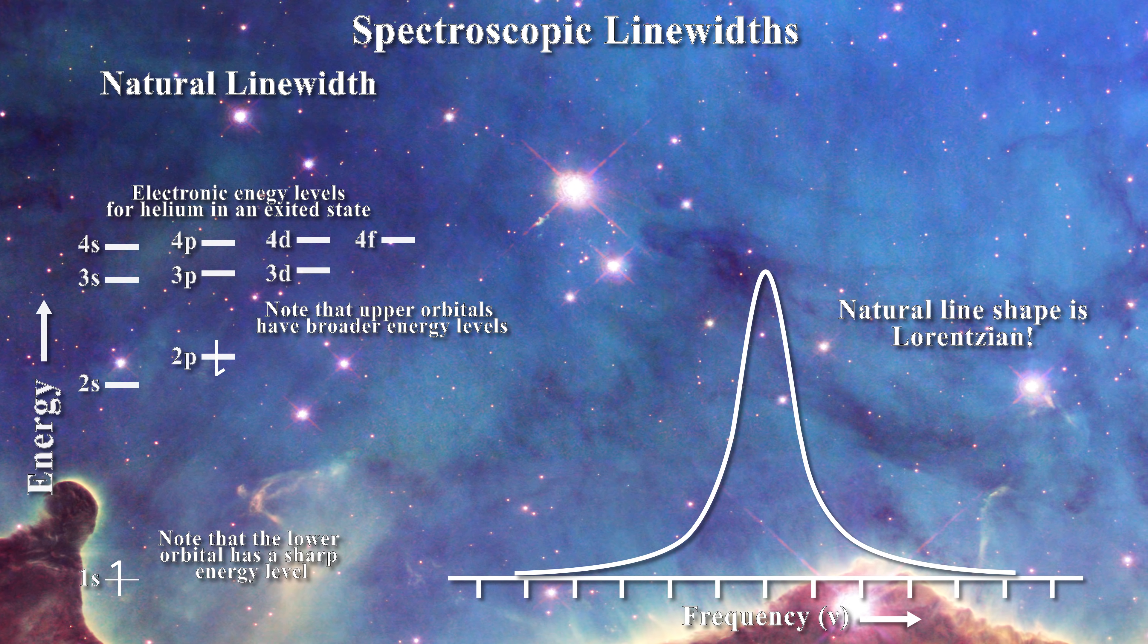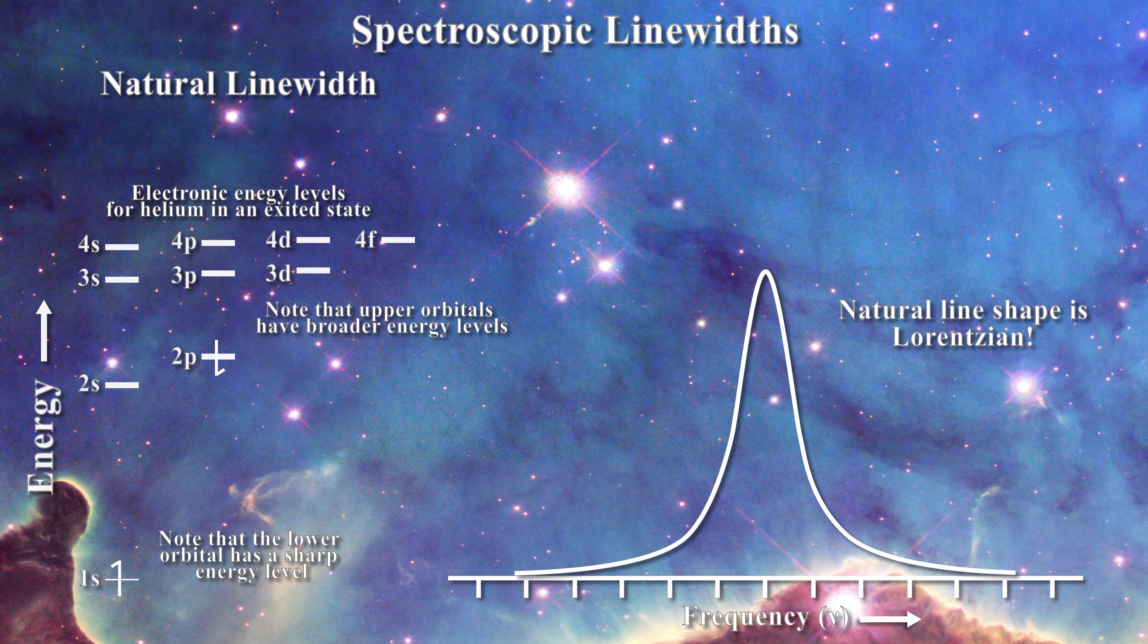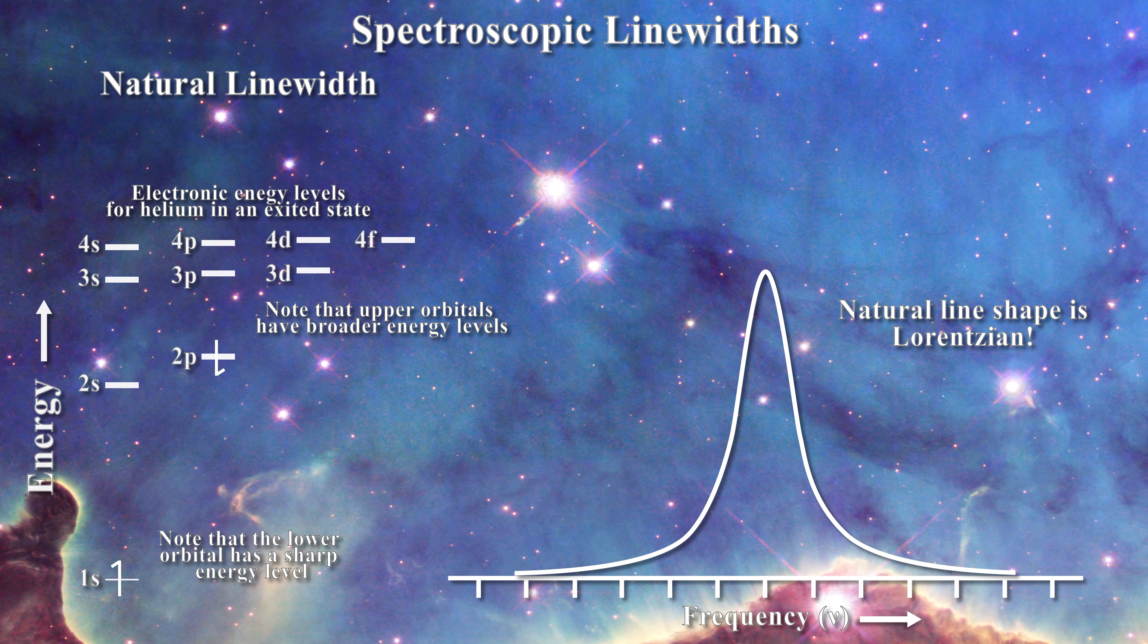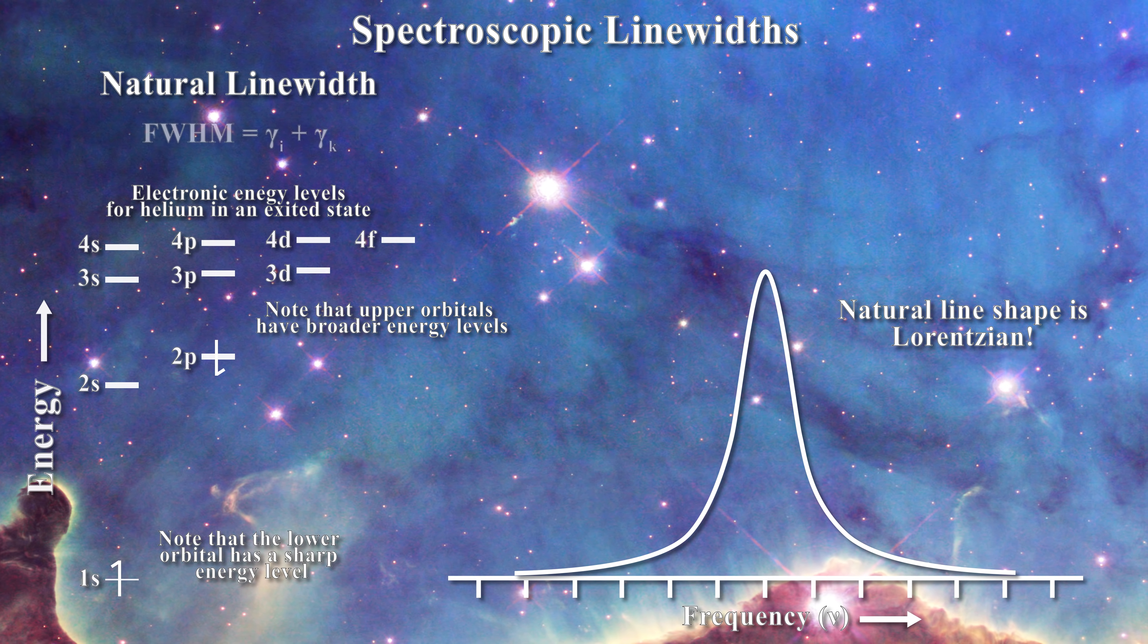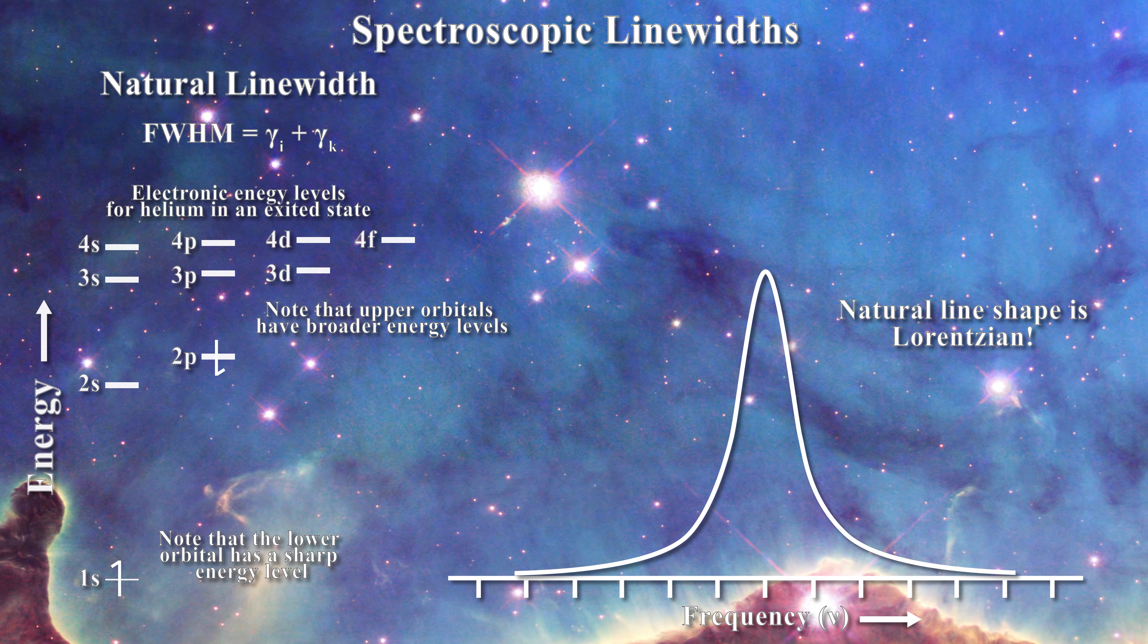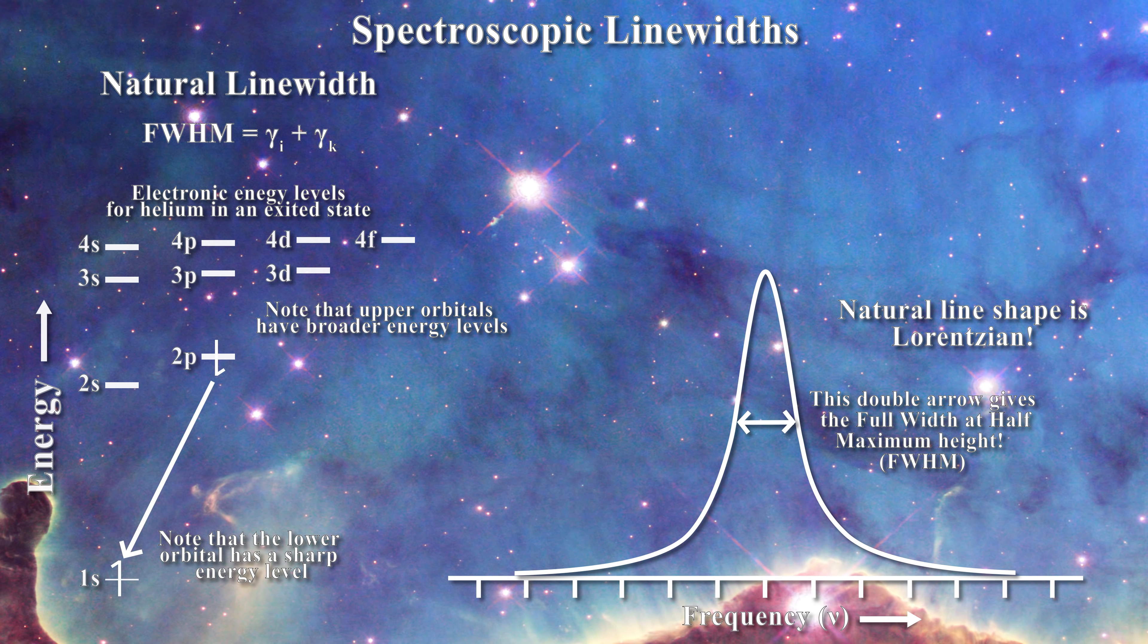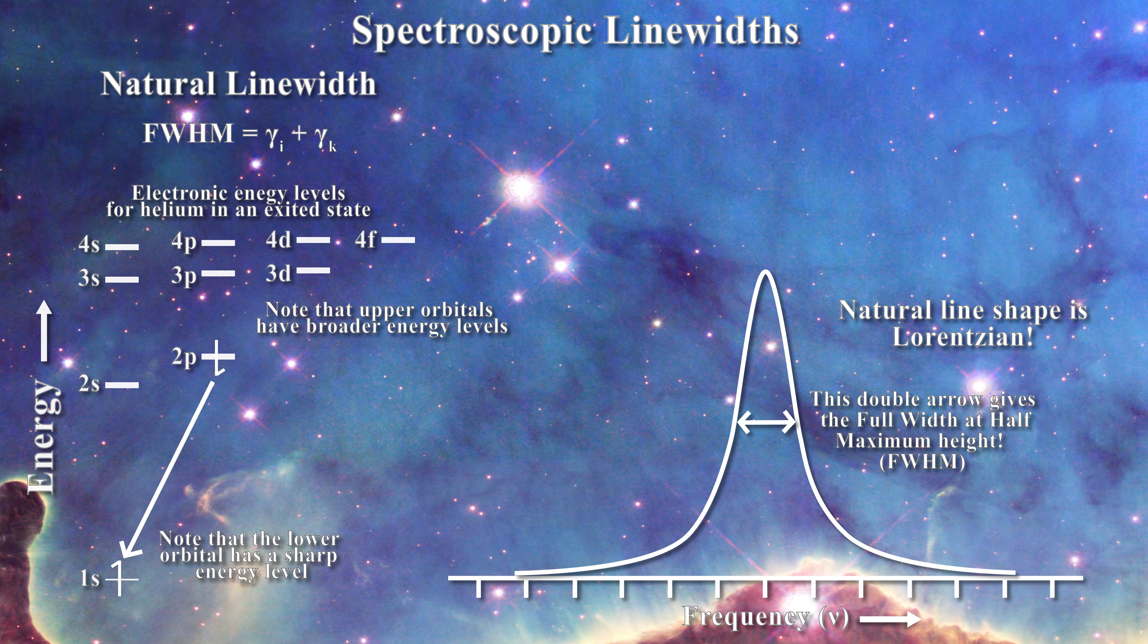The lower energy level of the atom does not contribute to the natural spectral width because an electron can stay in the lowest energy level for an indefinite period. Conversely, all excited states have widths because the amount of time the electron will spend in that state before moving to a lower energy state is not infinite. The natural width of a line for any given transition is given by this equation where FWHM stands for the full width at half maximum of the line. That is this distance on the line. Gamma I and gamma K refer to the widths of each state involved in the transition.